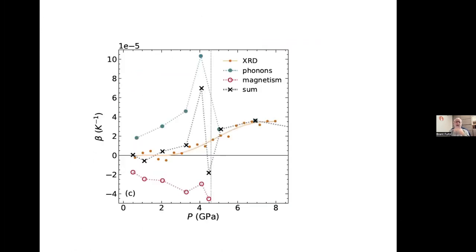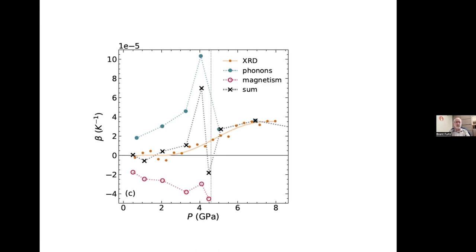Putting it all together: the entropy from magnetization increases as pressure squeezes out the magnetic order, while the phonon entropy decreases as the solid stiffens under pressure. These two contributions cancel remarkably well — approximately zero total entropy change with pressure — up to about three or four GPa. This is the essence of the INVAR effect: a precise cancellation between the change of magnetic entropy with pressure and the change of phonon entropy with pressure, of opposite signs. Above the Curie pressure, we get a fairly normal thermal expansion.